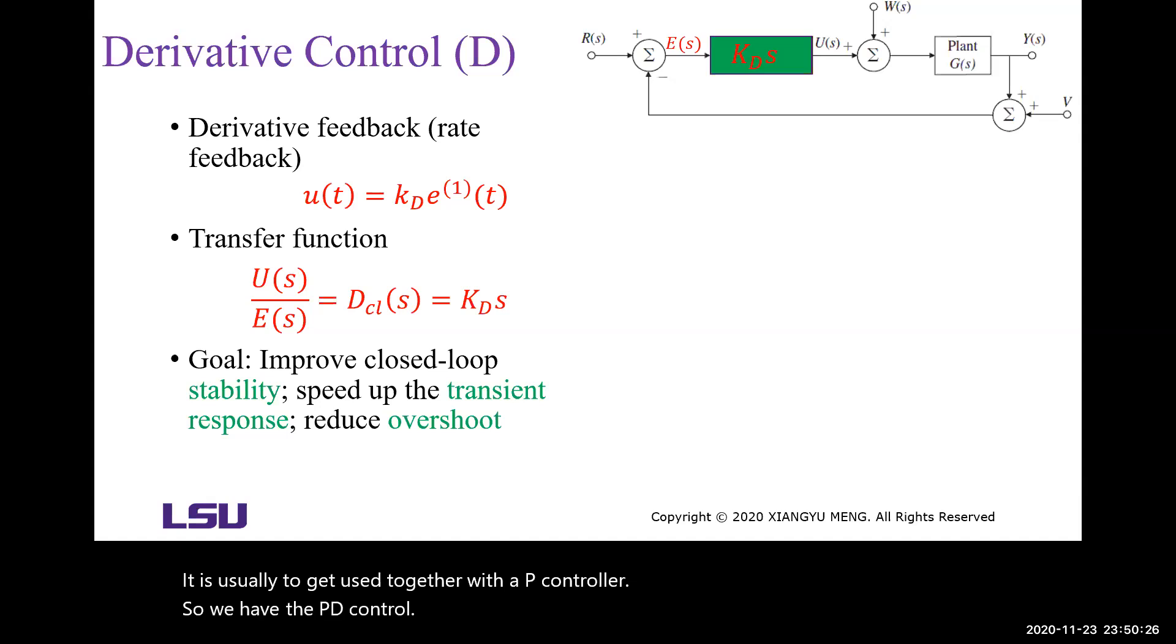The reason why we do not use the D control alone is because it does not provide the desired information.